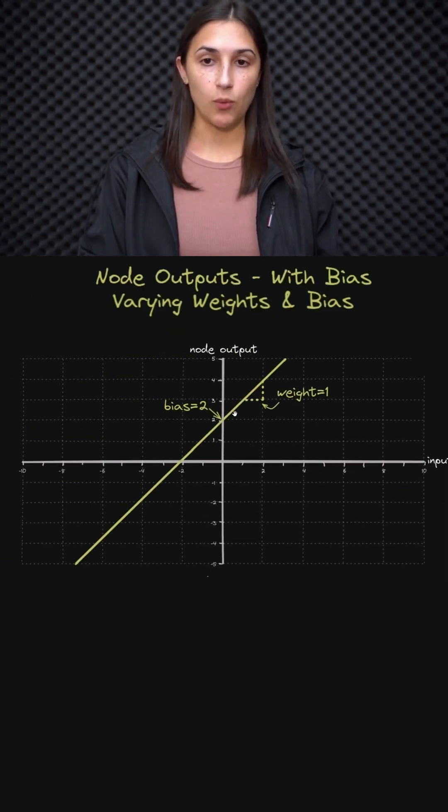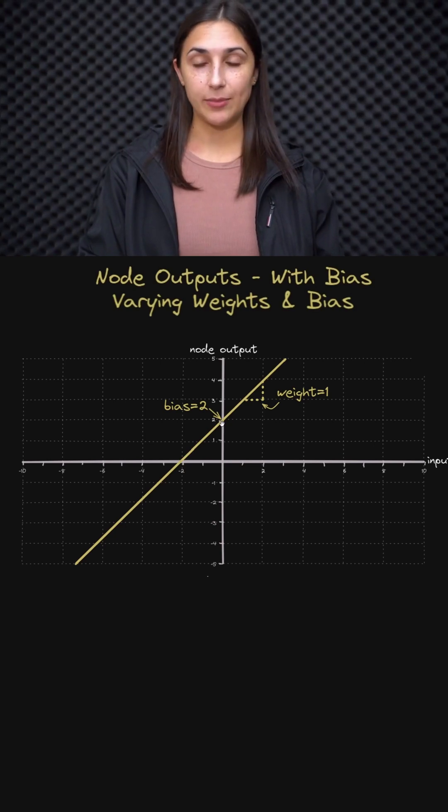So here we have a weight of one, and now we have a bias that has been set to two. So if we were to pass in an input of two, multiply that by our weight of one, that's going to give us two. And then we add our bias term of two in this case, and that's going to give us an output value for our hidden node of four for our input of two.